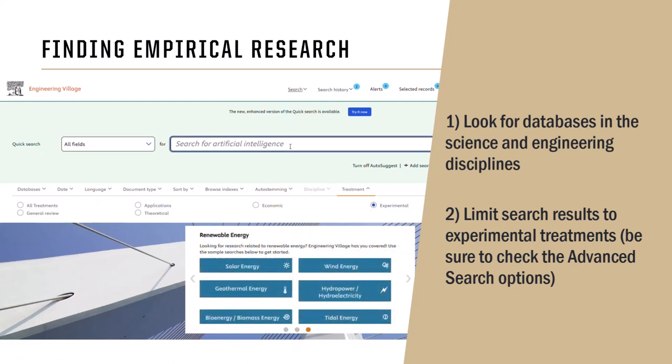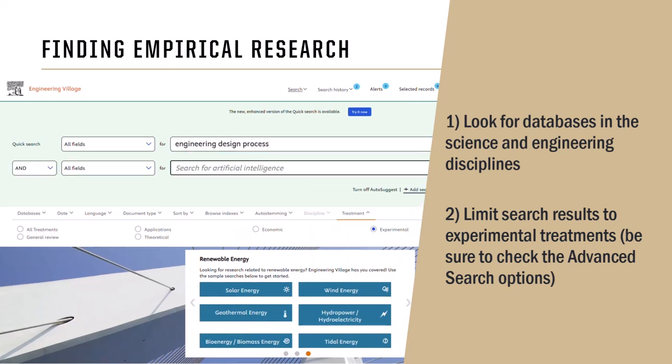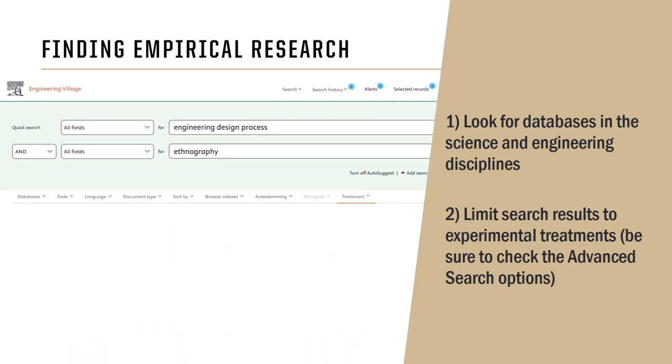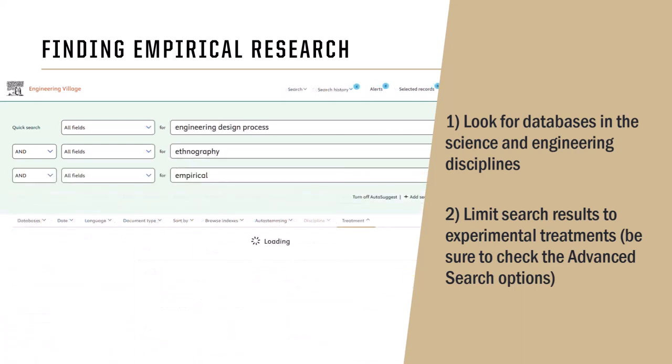If you know what kind of research methods you are looking for, you can enter that as a keyword in addition to your topic in order to help narrow your search as well. For example, engineering design process and ethnography. This is preferable to using the word empirical as a keyword in your search, which may limit your results unnecessarily.